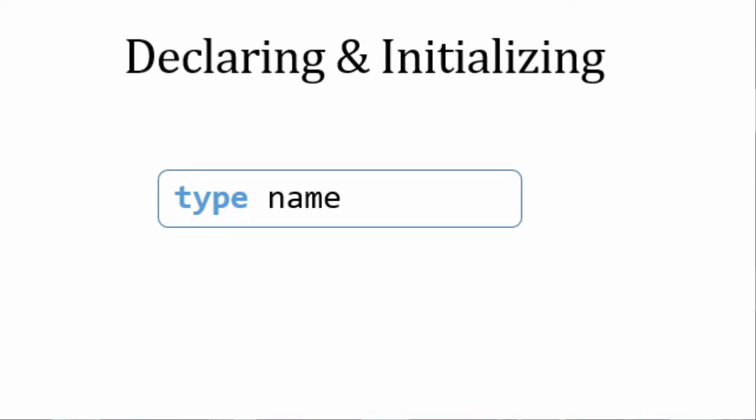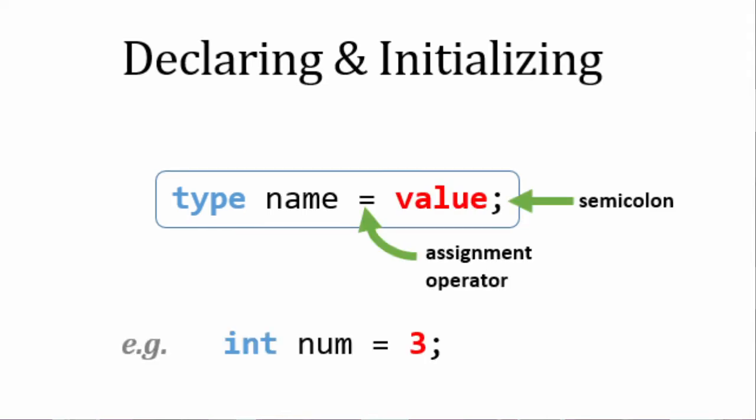To make a variable, first put the type, then the variable name. This is called declaring the variable. If you want to give the variable an initial value, put an equals sign, then the value. This is called assigning a value to the variable. Finally, end the line with a semicolon.